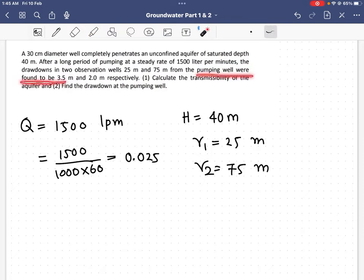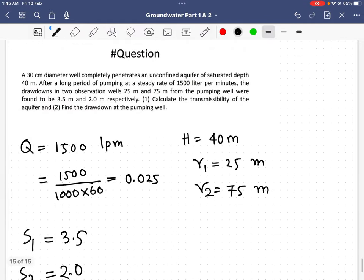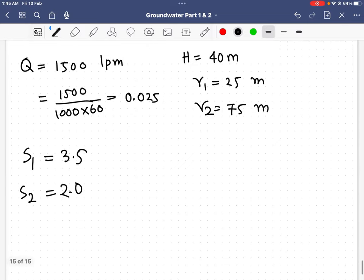The pumping well drawdowns were found to be 3.5 meters and 2.0 meters, so s1 will be 3.5 and s2 will be 2.0. Now I have to find out the transmissibility. For this unconfined aquifer, we have to apply the formula.